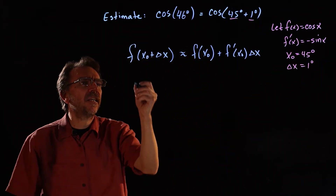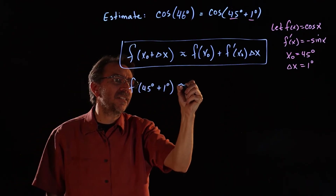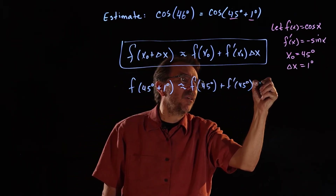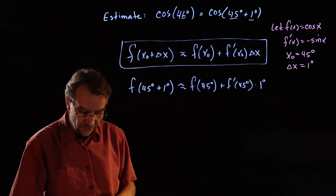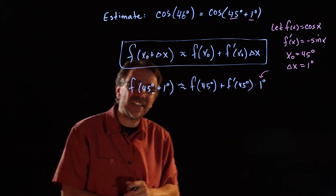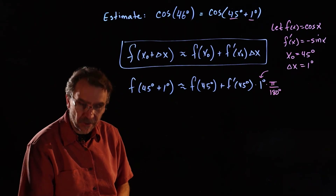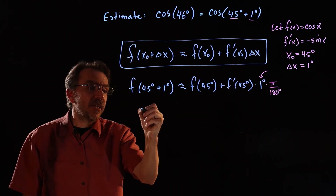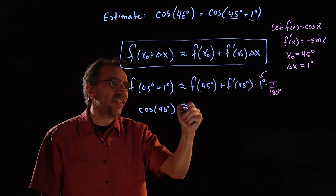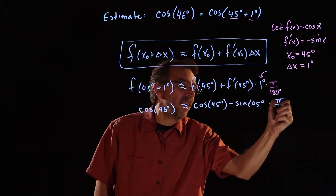Substituting into the formula: f of 45 degrees plus 1 degree is approximately equal to f of 45 degrees plus f prime of 45 degrees times delta x of 1 degree. We need to be careful — the derivative of cosine was derived using radians, so we multiply by pi over 180 to convert 1 degree to radians. That gives cosine of 46 degrees approximately equal to cosine of 45 degrees minus sine of 45 degrees times pi over 180.